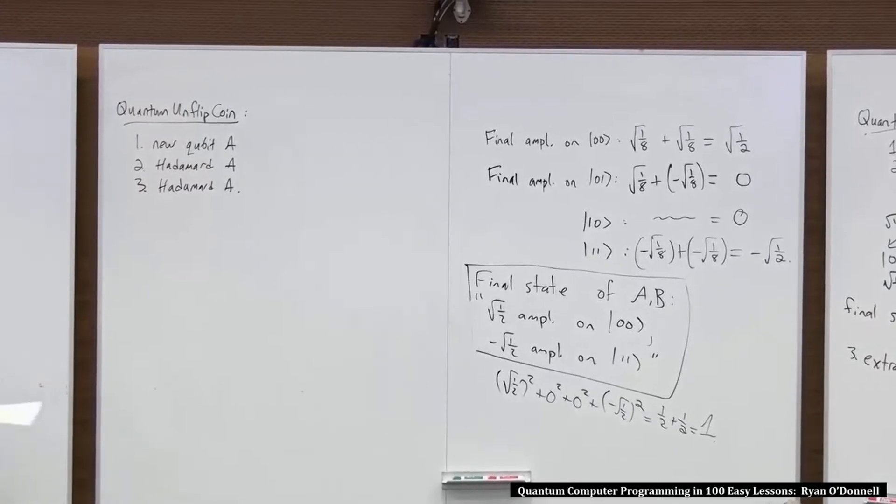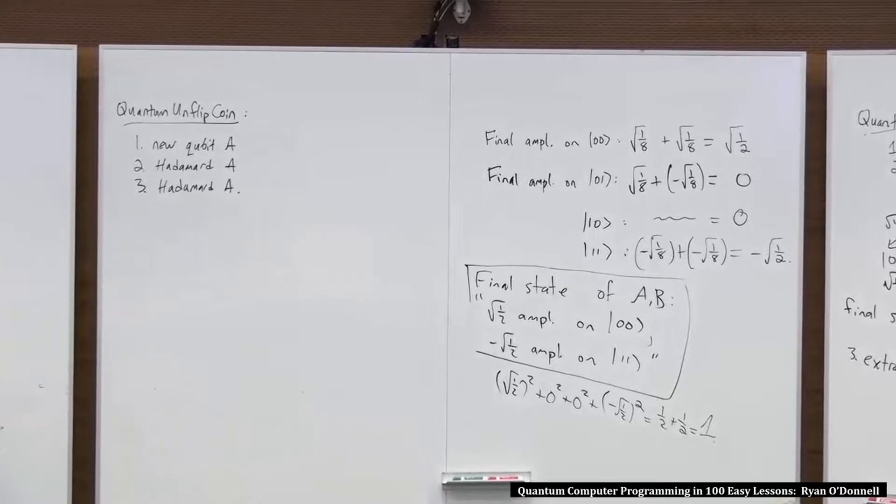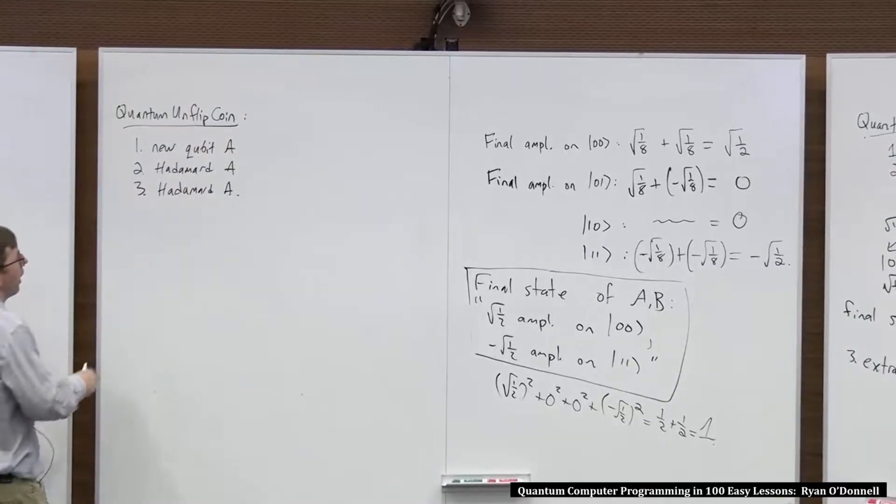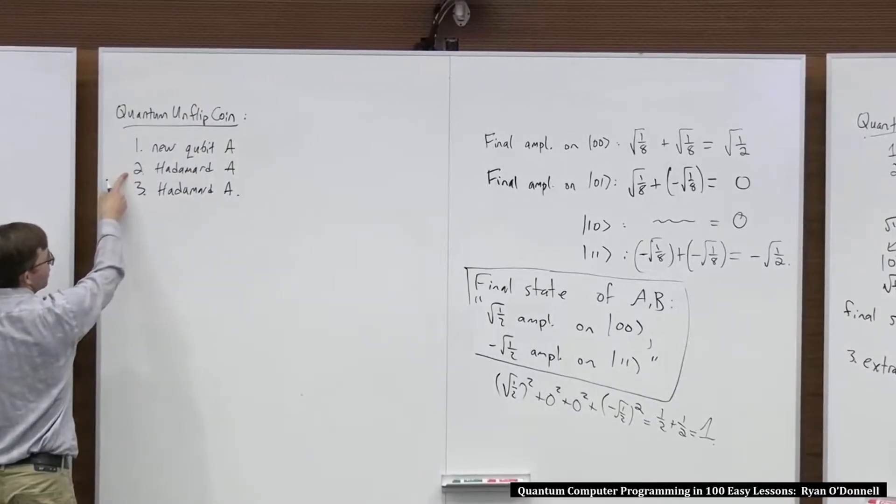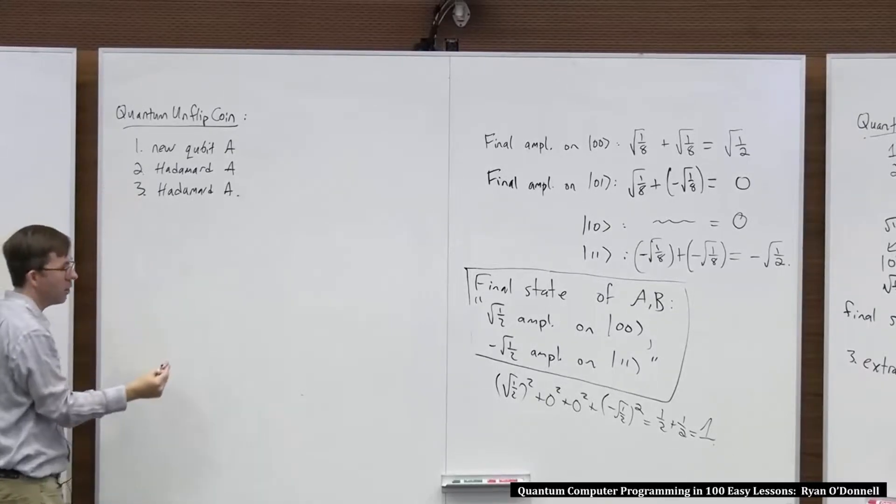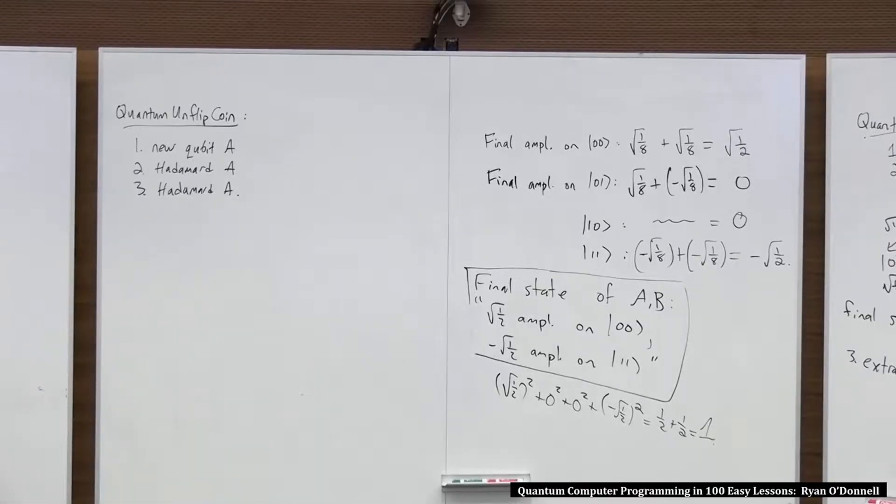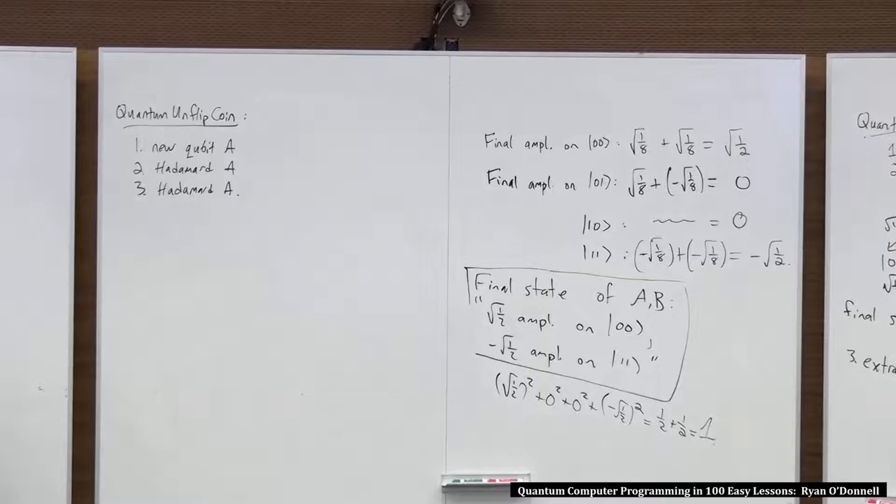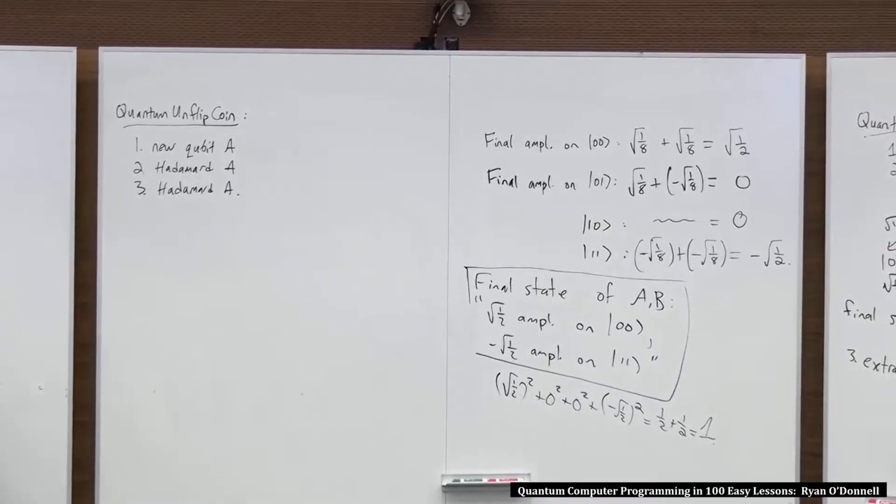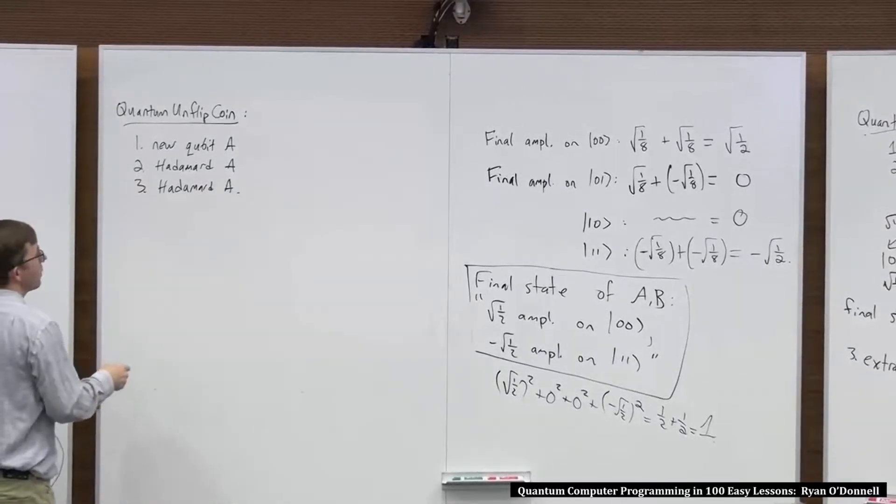This physically corresponds to, I don't know, you take your photon and you get it vertically polarized, that's maybe this, and then you pass it through some quartz slab of a certain thickness, and that corresponds to doing a Hadamard, and then you pass it through another quartz slab of the same thickness, and that corresponds to doing a Hadamard again. Or something like that. If it's electrons, then you fire some microwaves at them for a certain amount of time. Let's just draw the tree for this.